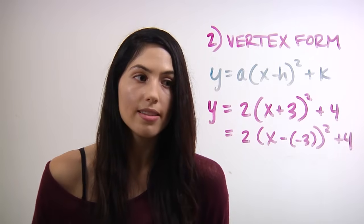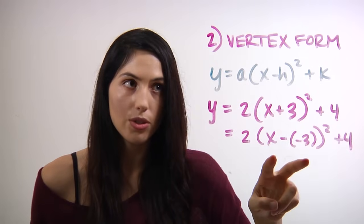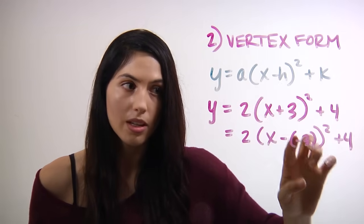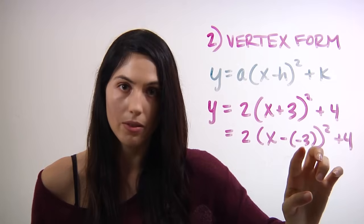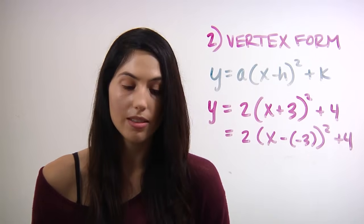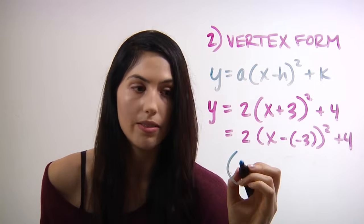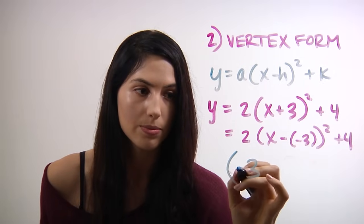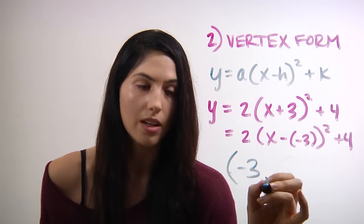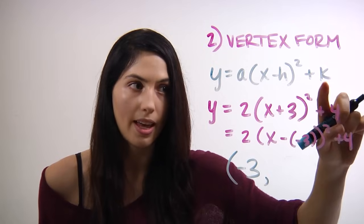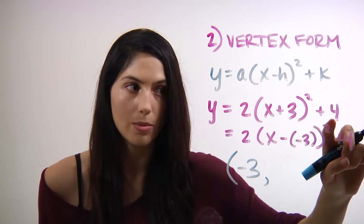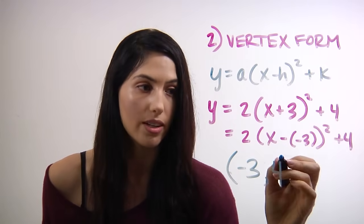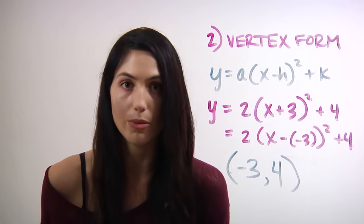So now you can see that to match it to the vertex form, h has to be negative 3. So the vertex in this case would have an x-value of negative 3 and a y-value that is k, which is simply positive 4. So our vertex is (negative 3, 4).